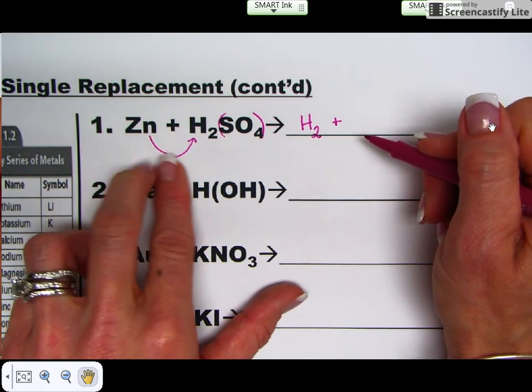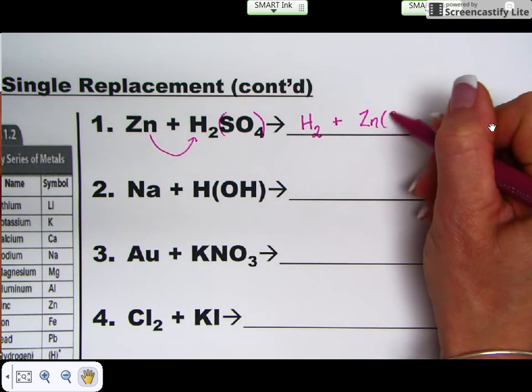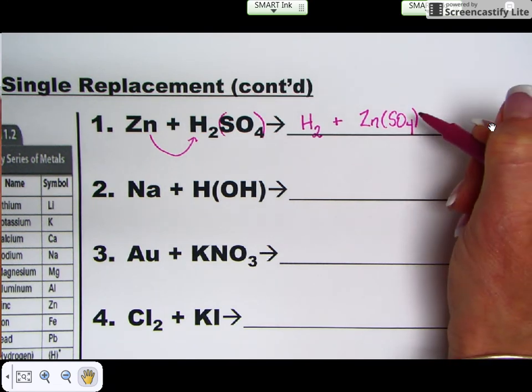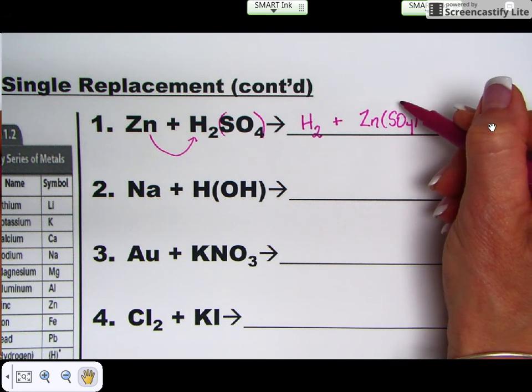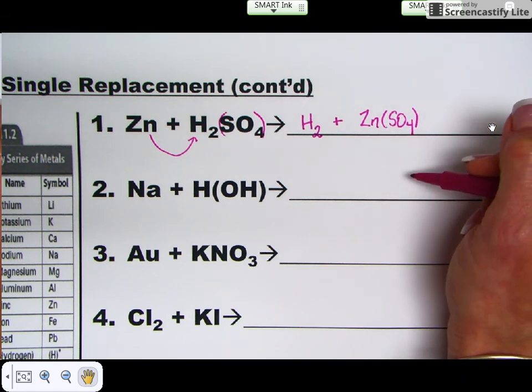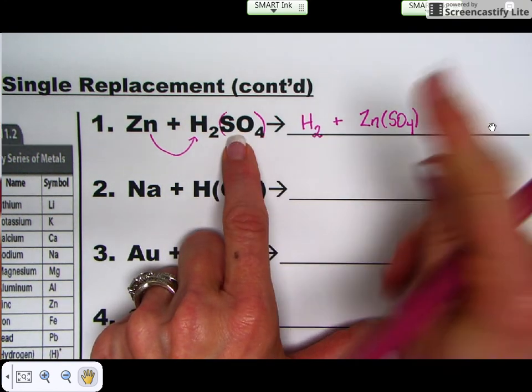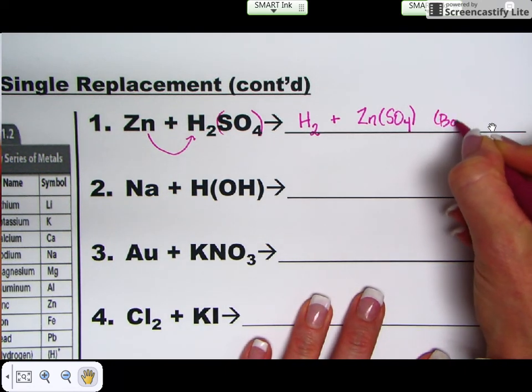Now zinc is going to pair up with sulfate. Put your symbols side by side, Zn and SO4. You have to label across your charges. Zn has a plus 2 charge. Sulfate is a minus 2 charge. The charges will cancel. So this is your formula. The last thing you want to do is go back and balance this. There are two hydrogens on each side, one sulfate on each side, and one zinc on each side. So this equation happens to already be balanced.